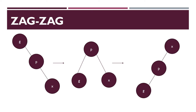Next is zag-zag rotation. Here the nodes are towards the right side. Just move node G to the left side. Then the nodes will be P, G and X. Now again perform zag operation. Then the nodes will be X, P and G. So this is zag-zag rotation.